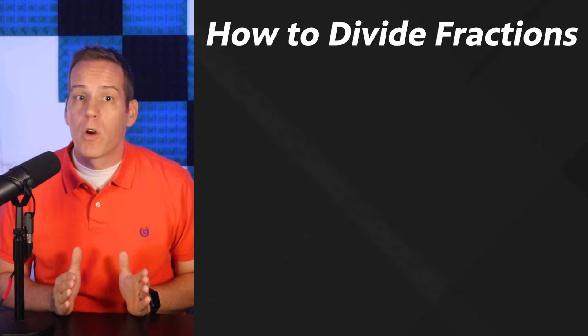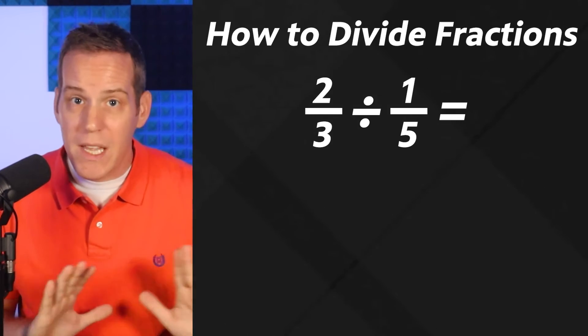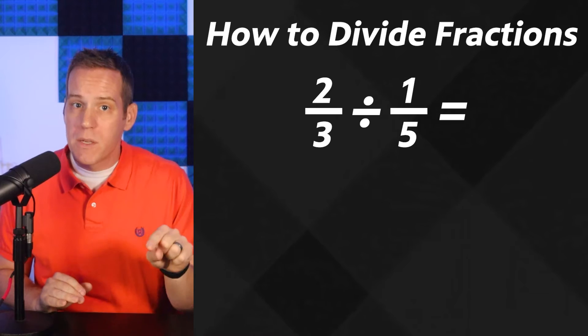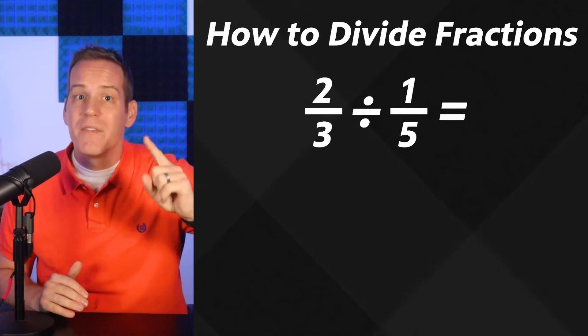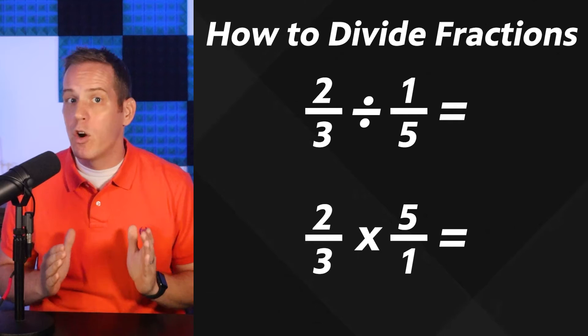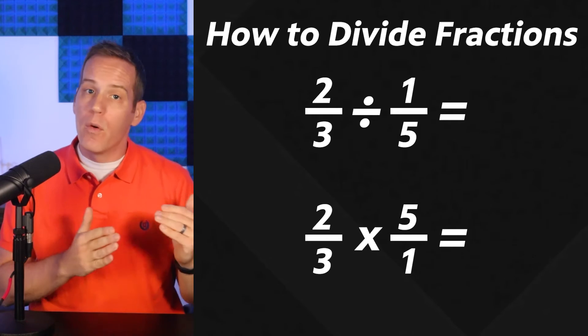So in our problem, we're going to leave the first fraction the same, don't change that number, but we're going to multiply it by the reciprocal of the second fraction. So we're turning that one over five into five over one.